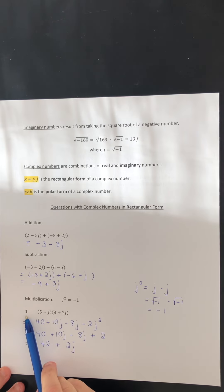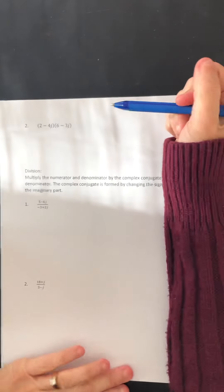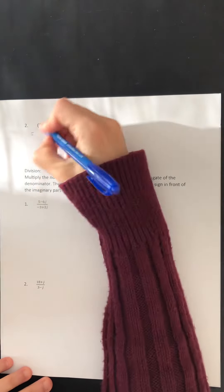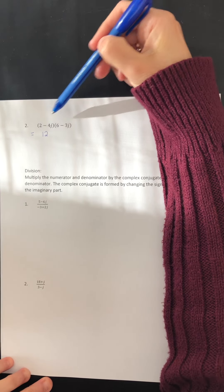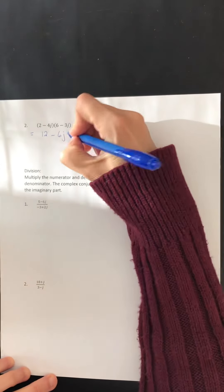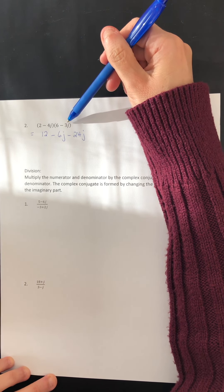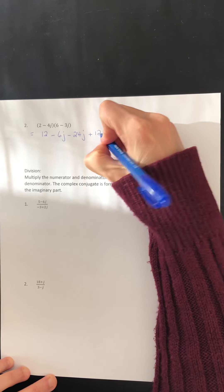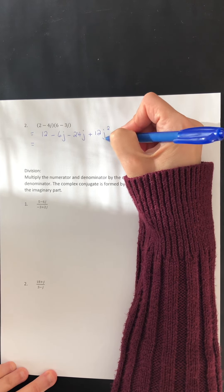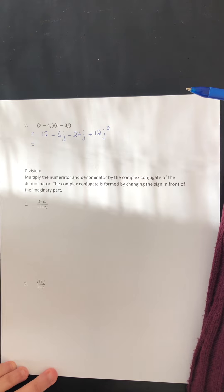Let's do a second example of multiplication. Using FOIL: the first term is 2 times 6, or 12. On the outside, we multiply 2 by negative 3j. On the inside, we multiply negative 4j by positive 6. The last term is the multiplication of negative 4j and negative 3j, which gives positive 12j squared. In the next step, we change j squared to negative 1, so this last term is 12 times negative 1, which is the real number negative 12.